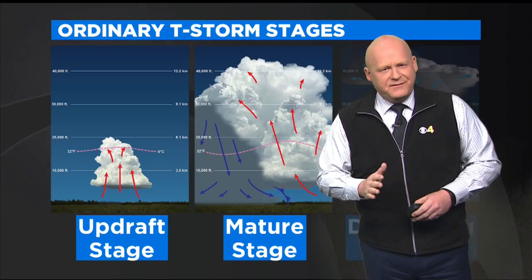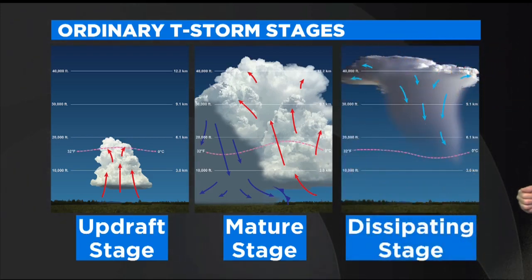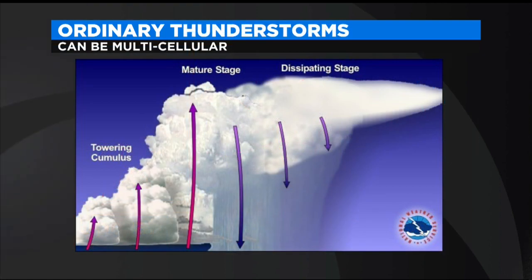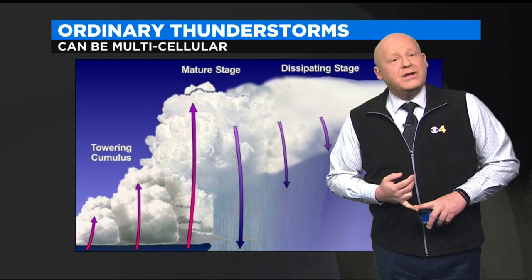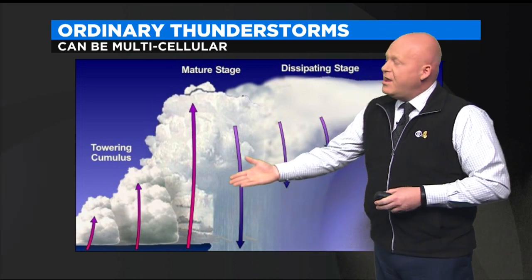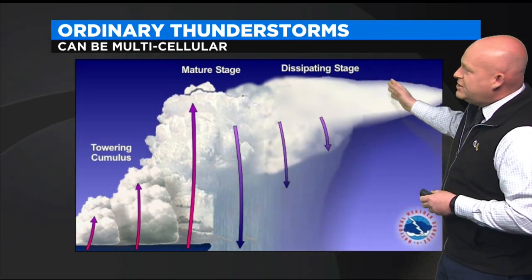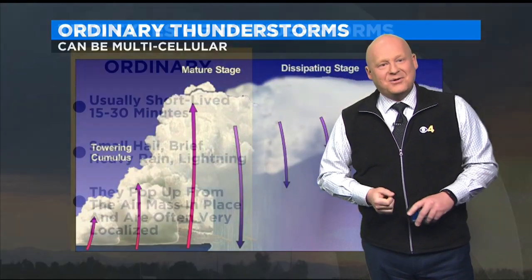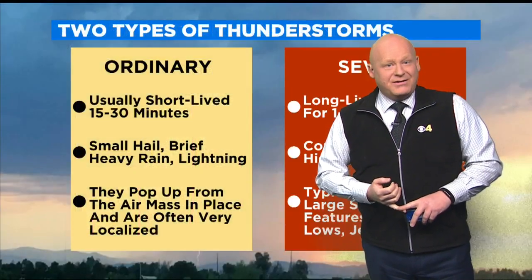This process takes about 15 to 30 minutes. And once that updraft gets cut off, all that's left is the downdraft. And with nothing feeding the storm, you enter stage three, or the dissipating stage. And this whole process only takes about 15 to 30 minutes. Now you can have an ordinary thunderstorm sitting by itself, or you can have several sitting side by side, all in the various three stages — some dissipating, some mature, and some just starting to grow. And that is the ordinary thunderstorm.